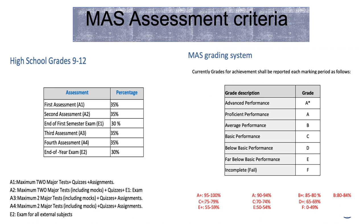According to the current modern American system school grading, an A overall grade achieving 90 to 94% of the perfect score describes a proficient performance. And an A star overall grade, reaching 95 to 100% of the ideal score, represents an advanced performance.